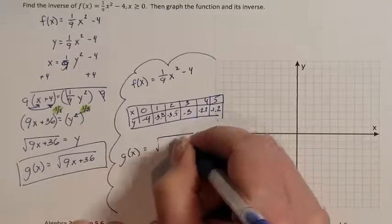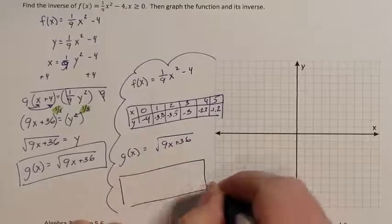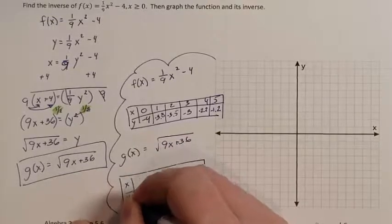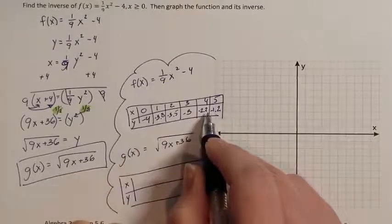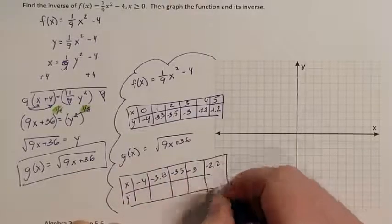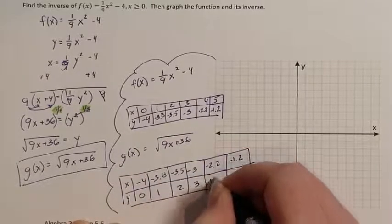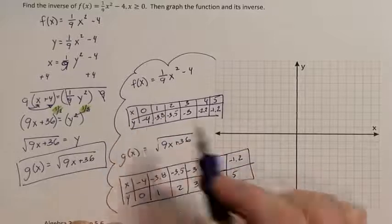If that is my f, then if I want to graph my g, your x's just need to switch with your y's. So what was a y is now an x. And what was an x is now a y. So let's go ahead and graph f of x.